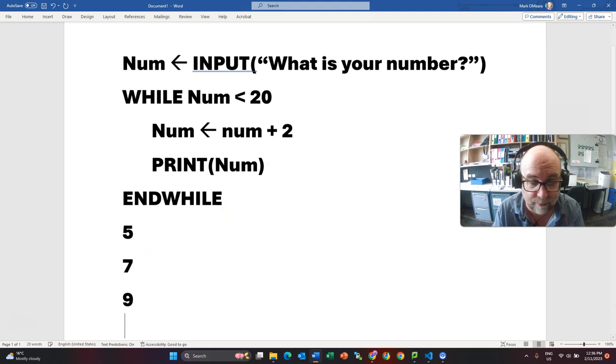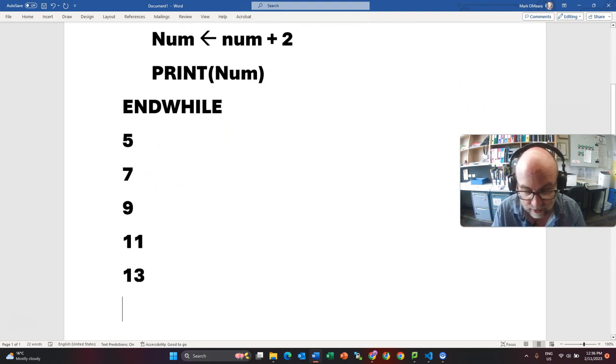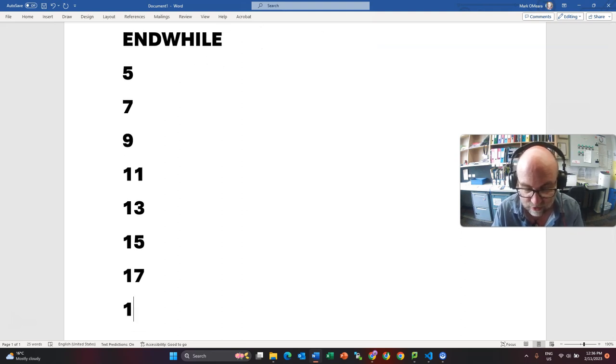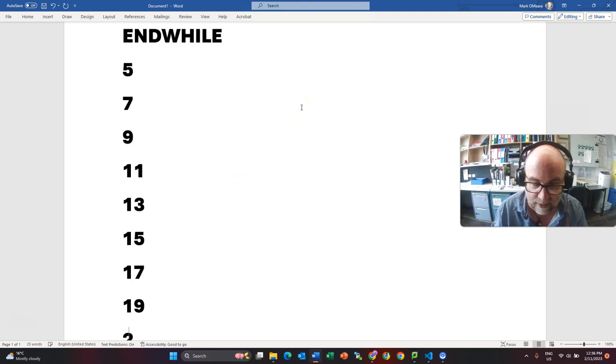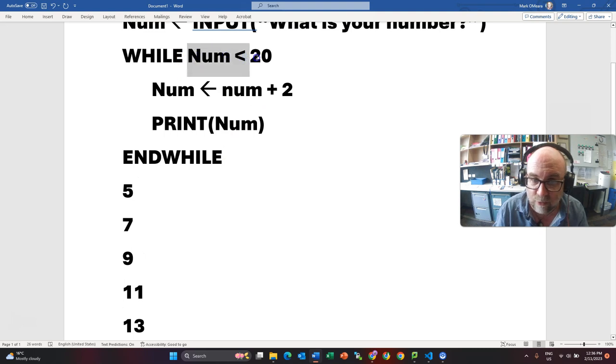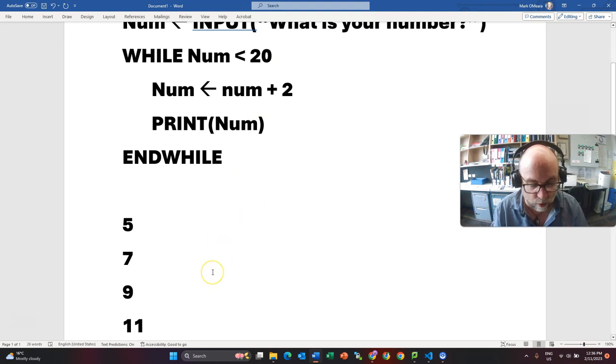Then we go to 9. Still true. 11. Still true. 13. Still true. 15. Still true. 17. Still true. 19. Still true. Now, it will then go through and because 19 is still true, it will then add 2 to it and it will add 21. And then once we get to 21, it will go up here and it will fail this test. So then it comes out of the loop and it runs whatever is next in the program. So that's how we use a while loop.